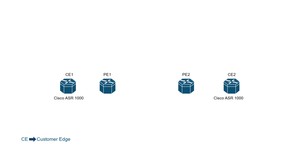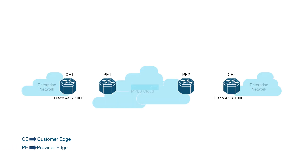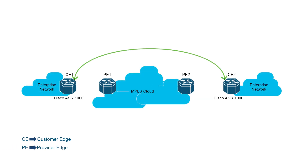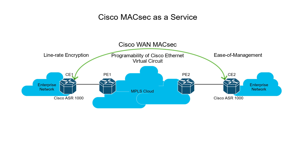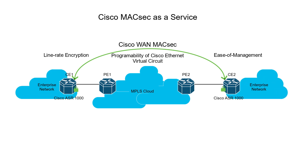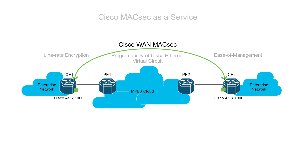To achieve this, what you need is an end-to-end encryption solution: MACsec as a service. MACsec as a service leverages all the powerful features of Cisco WAN MACsec, tops it up with line rate encryption, ease of management, and programmability of Cisco Ethernet virtual circuit, thereby securing your network end-to-end seamlessly.